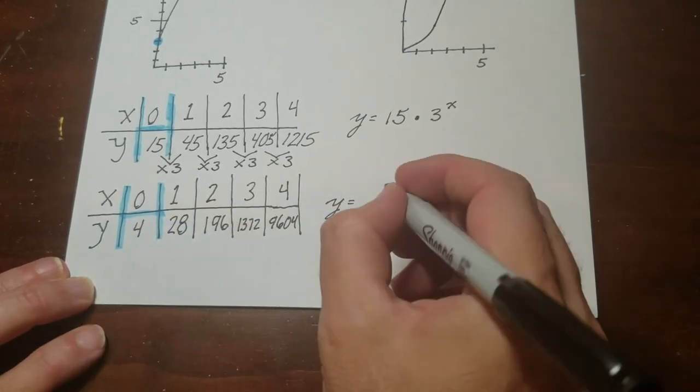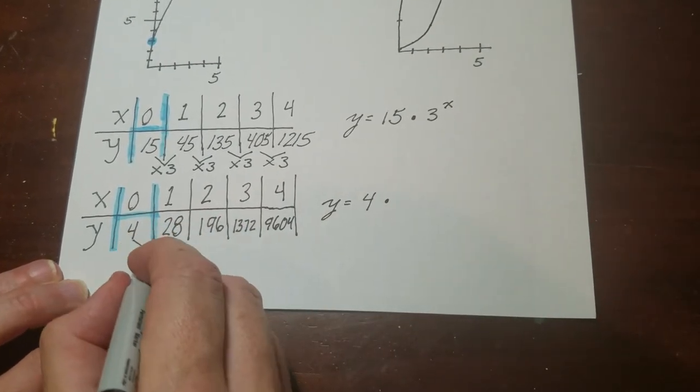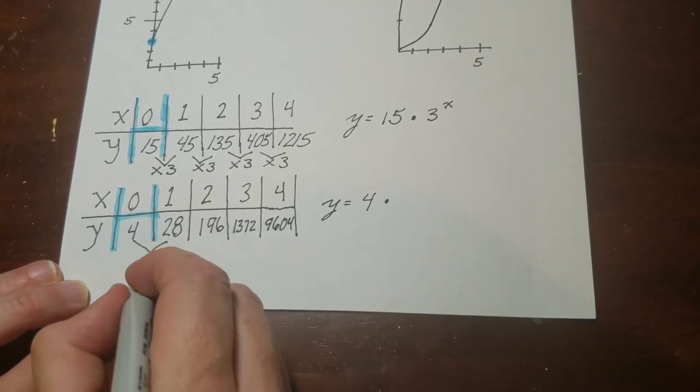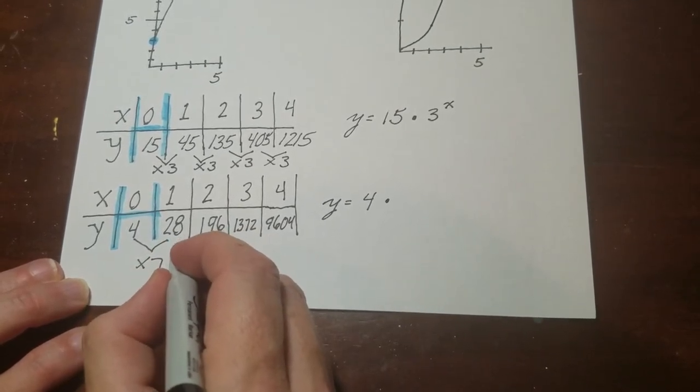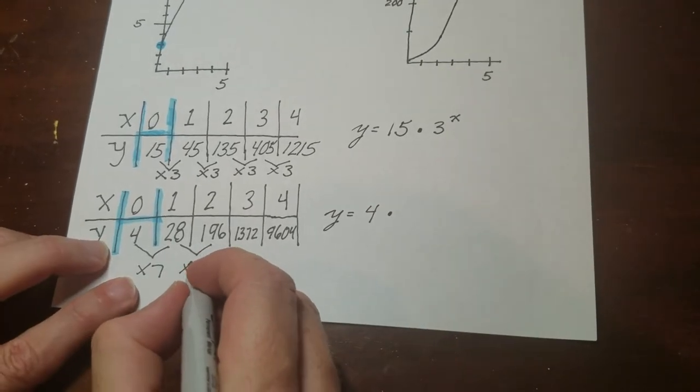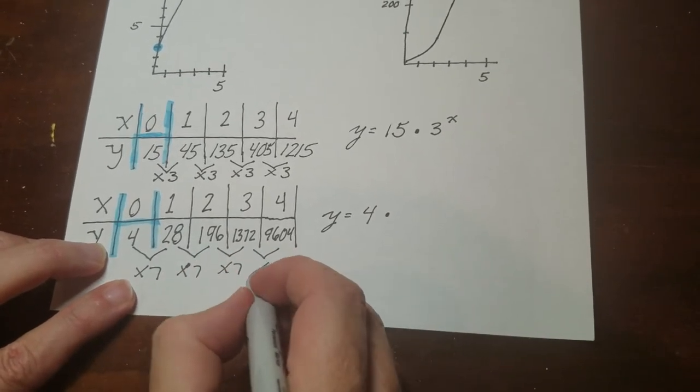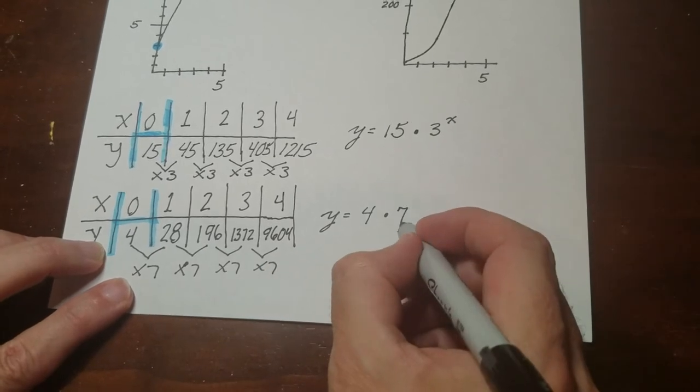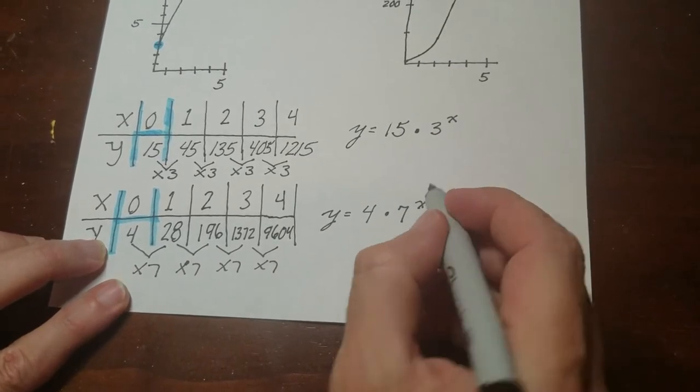It starts off here at the 4, and then from 4 to 28, that's times 7. 196 divided by 28 is 7, so it's times 7 every single time. So that means my multiplier is 7, and the input is x.